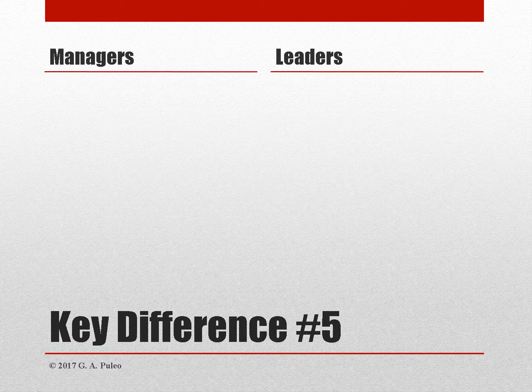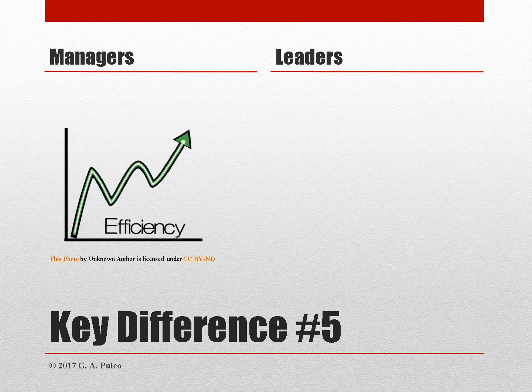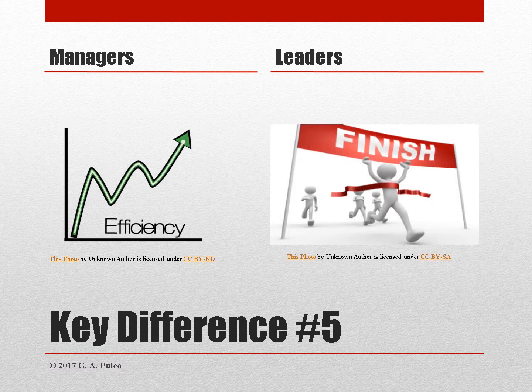The fifth key difference is closely aligned with the fourth. Managers focus on efficiency — doing things the right way — with a lot of emphasis on the cost of resources. In contrast, leaders focus on effectiveness — doing the right thing — and look at the finish line or end goal. If the end result isn't what was desired, the leader goes back and introduces new ideas to change the status quo so that the desired results can be achieved.